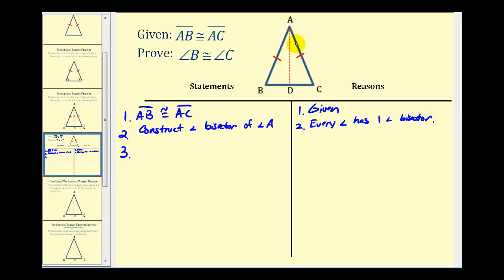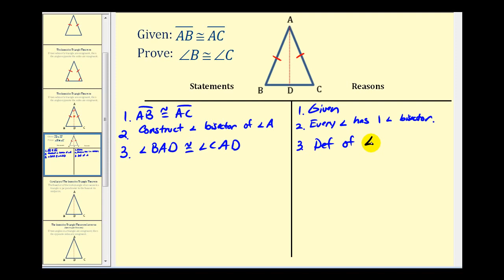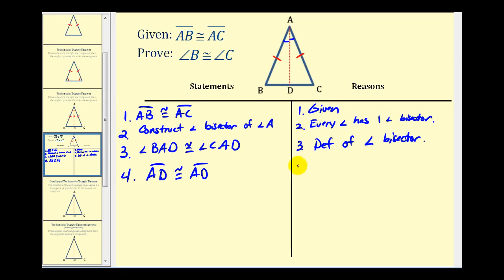Step three: if AD is an angle bisector, we can say that angle BAD is congruent to angle CAD. This is by the definition of an angle bisector. So we know this little angle here is congruent to this little angle here. And then for the other congruent side, we can state that segment AD is congruent to itself. This is by the reflexive property.